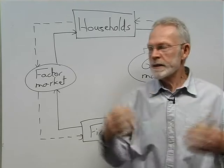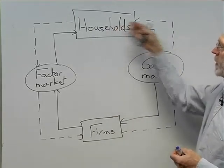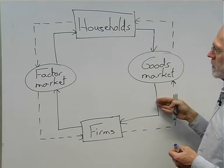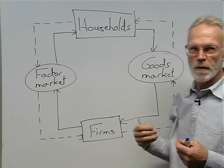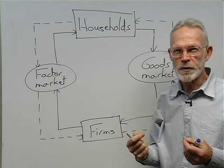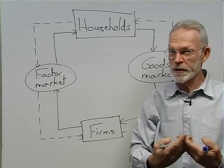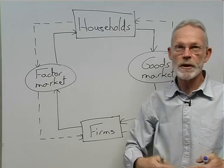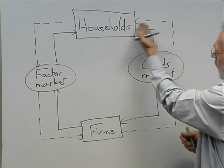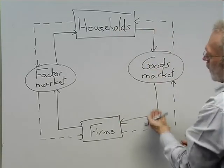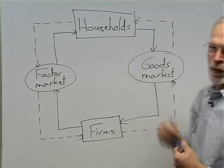Now let's assume for some reason there's an increase in spending by households. Households spend more. What will firms do? How would they react? Well, if there's an increase in spending on their goods and services, they would need to jack up their production. So if households spend more, firms will have to produce more.